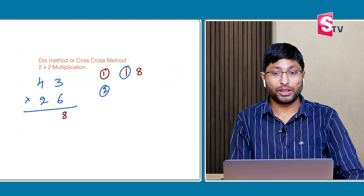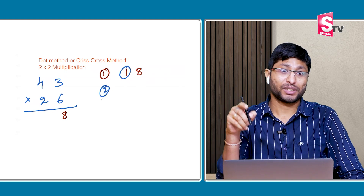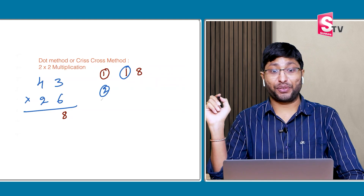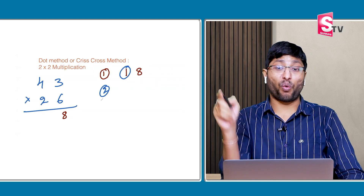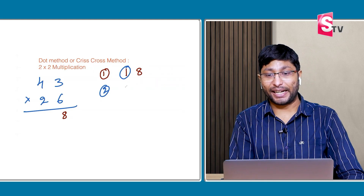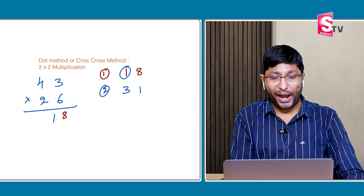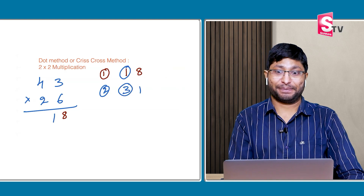Step 2: 4 × 6 = 24. 3 × 2 = 6. 24 plus 6 = 30. Plus 1 carry = 31. Write down the 1; 3 carry.